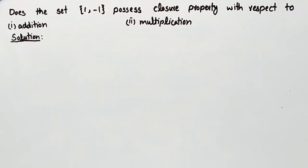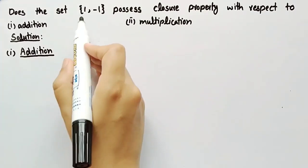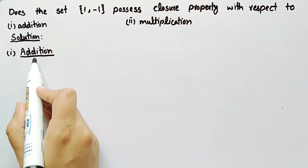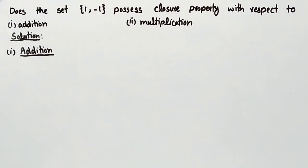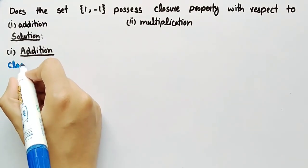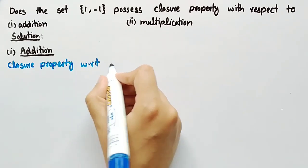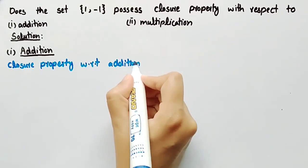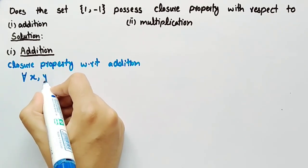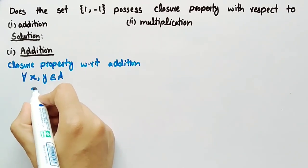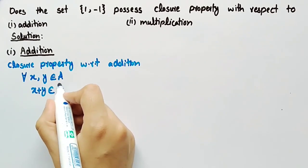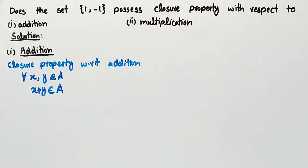Coming towards its solution, firstly we will find whether the set {1, -1} possesses the closure property with respect to addition or not. The definition of closure property with respect to addition is: whenever we add any two elements from a set, their sum must also be in that set. Then we can say that the set holds closure property with respect to addition.